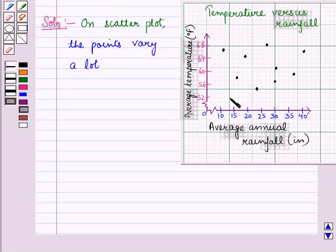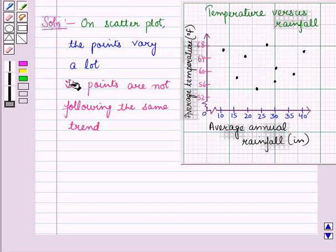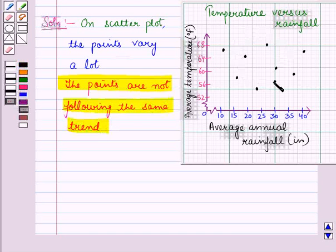Here some points are moving upwards and some are moving downwards, and these points are not following the same trend. They are scattered all over the graph. It shows that there is no relationship between the two variables.